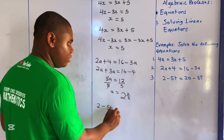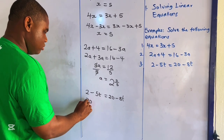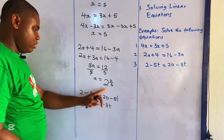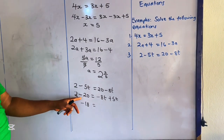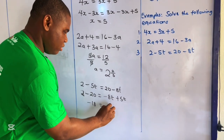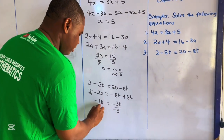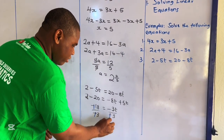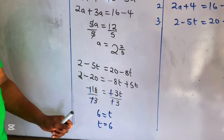The last question: 2 minus 5t equals 20 minus 8t. Collecting like terms, we move the t terms to one side: minus 5t plus 8t and the constants give us minus 3t equals negative 18. Dividing both sides by minus 3, the negatives cancel and 18 divided by 3 gives us 6. So t equals 6.